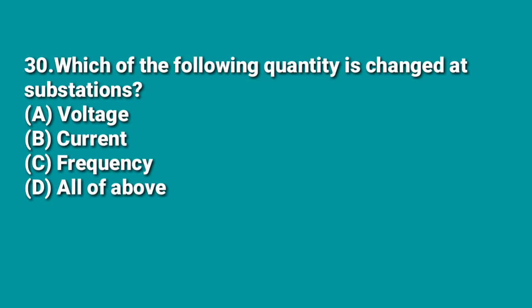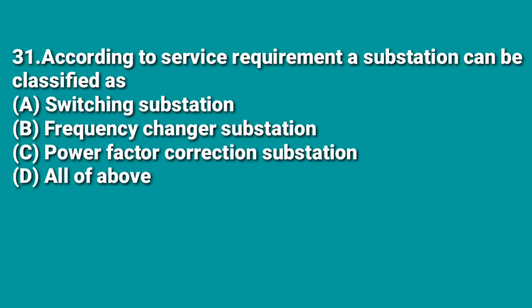The next question: which of the following quantities is changed at substations? A: voltage, B: current, C: frequency, D: all of the above. Most substations change voltage only; current and frequency are not normally altered. However, according to service requirements a substation can be classified as switching, frequency changer, or power factor correction, so D (all of the above) is the answer when considering all possible substation types.